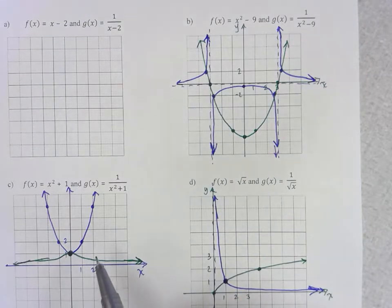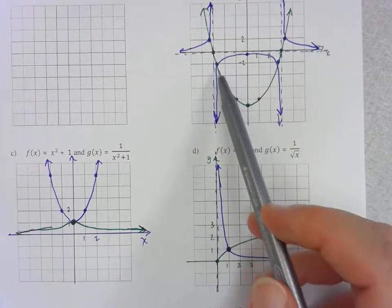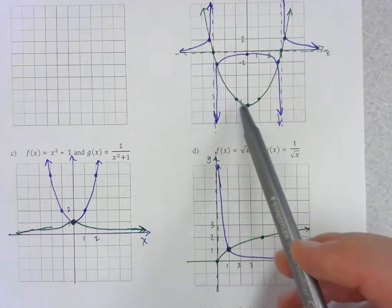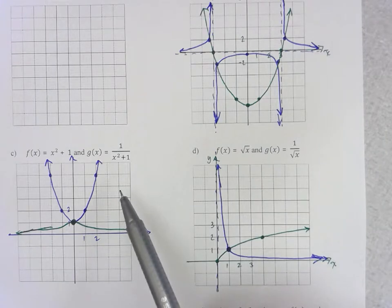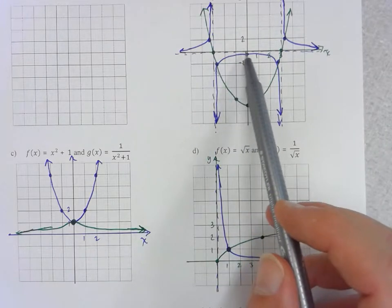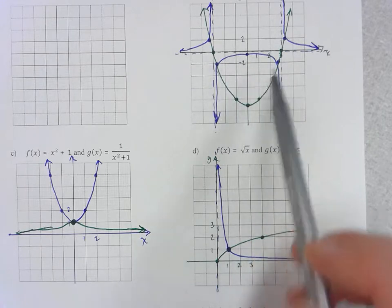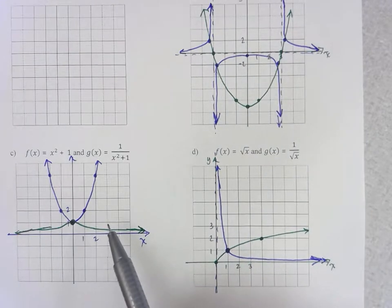Okay, and the last thing we saw was how a maximum, sorry in this case here, minimum value on our original function resulted in a local maximum value on our reciprocal function.